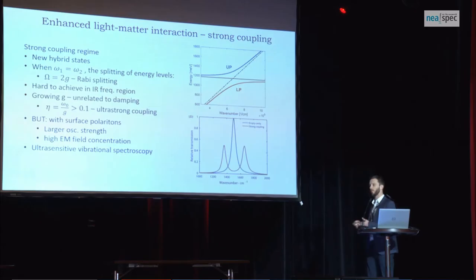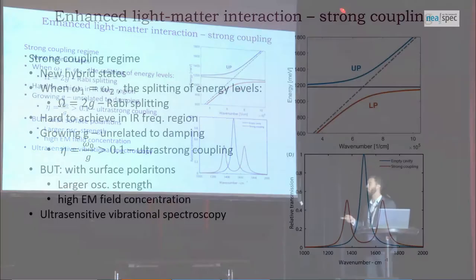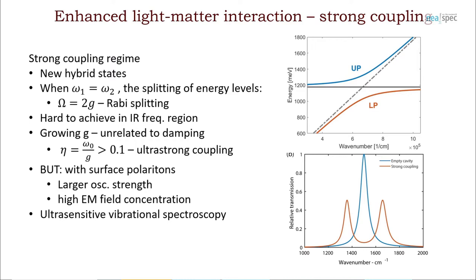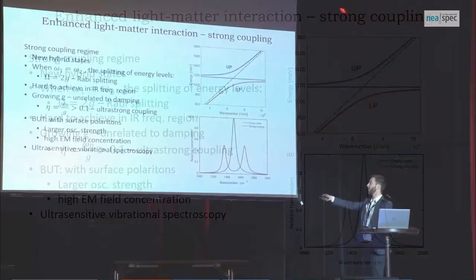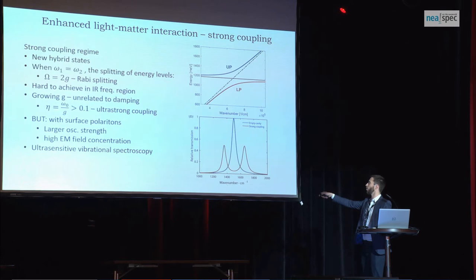The other very important regime is the strong coupling regime. When we overcome the losses with the coupling strength, the whole system changes — there will be a hybridized state and the eigenfrequencies will be totally different from the original ones. We get an upper and lower branch, with very pronounced avoided crossing of the modes, and the new hybrid modes will split in the spectrum. If we go further with the coupling strength, another regime can be achieved — the ultra-strong coupling — when the normalized coupling strength becomes the new measure.